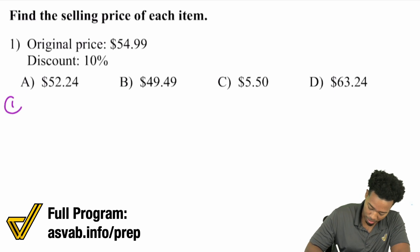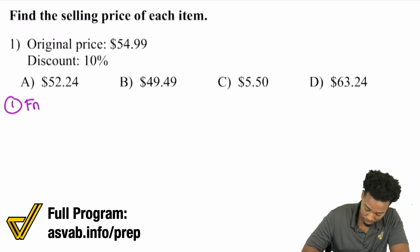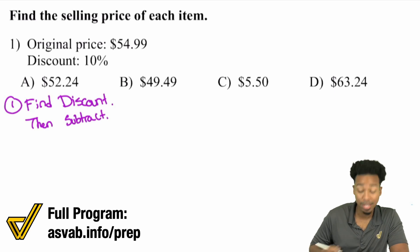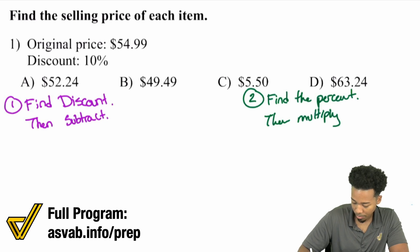Method number one: find the discount, then subtract. The second method, which in my opinion is the faster way, is: find the percent, then multiply.